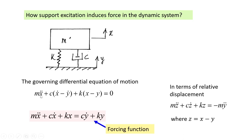If we transfer the terms c·y-dot and k·y to the right-hand side, this represents the forcing function. The forcing function or exciting force is induced due to base motion — that is, the base displacement and base velocity. Because of stiffness k and damping c acting with the ground velocity y, force is induced in the structure or mass.